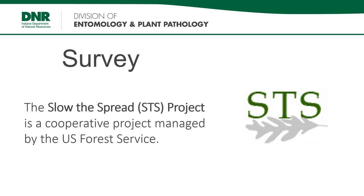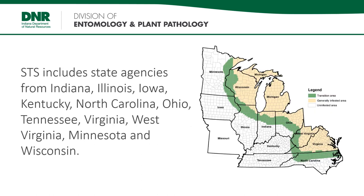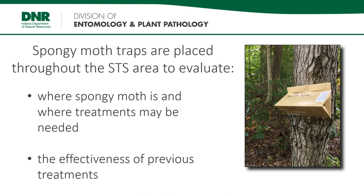To figure out how to manage Spongy Moth, we have to know where it is, and that means conducting a survey. The Slow the Spread, or STS, project is a cooperative program managed by the U.S. Forest Service, conducted in cooperation with the states along the leading edge of the Spongy Moth infestation. To monitor Spongy Moth populations, pheromone traps are placed in grids throughout the STS area. Remember, females don't fly — the pheromone in the trap mimics the female to attract and capture male moths, showing us where populations are, where populations are increasing, and how effective previous treatments have been.